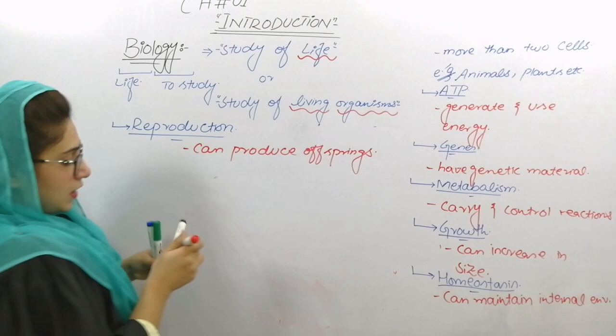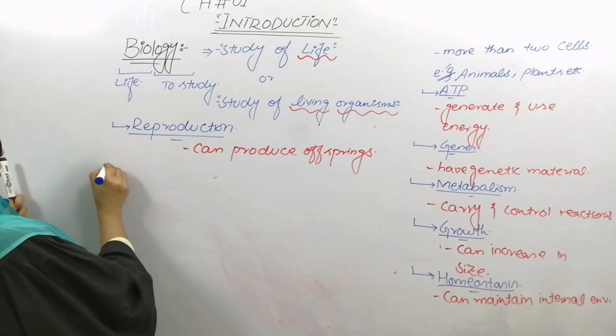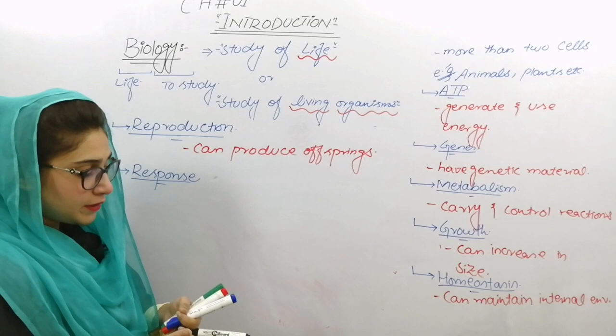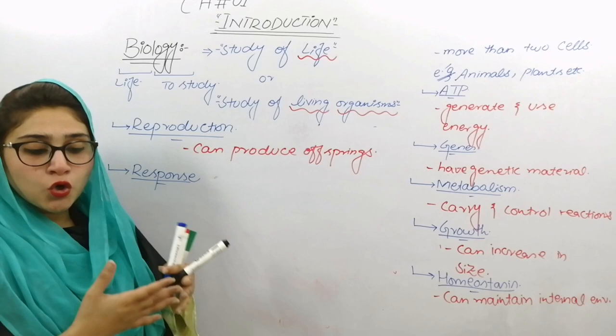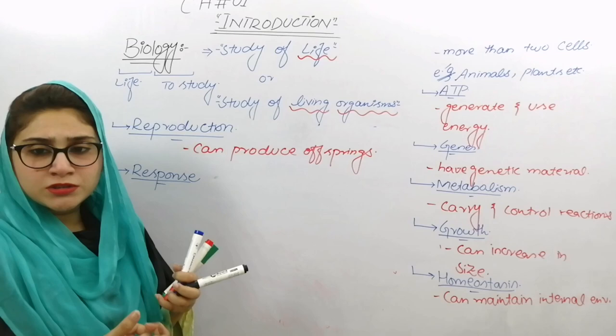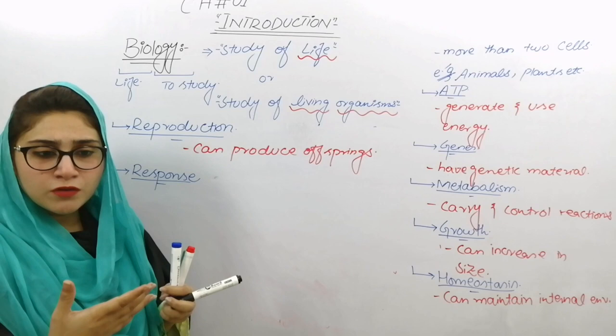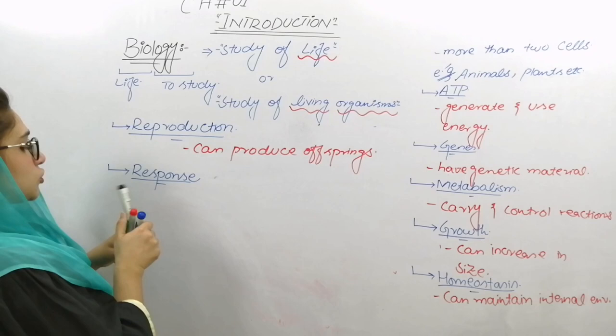Last जो हमारे पास character है — That is Response. They respond towards changes in external environment. जैसे बाहर अगर बहुत जादा temperature high है तो internal जो हमारी body है वो किसी ना किसी तरह response show करती है۔ For example, हमें पसीना आता है ताके body का temperature maintain हो سکے۔ شدید سردی میں shivering होती है ताके body के अंदर heat generate हो सके۔ They respond to external environment.